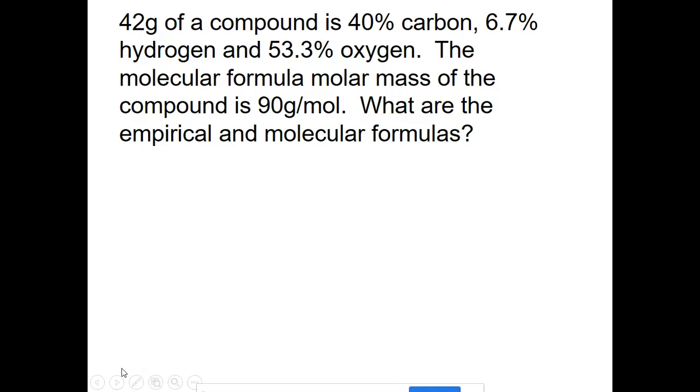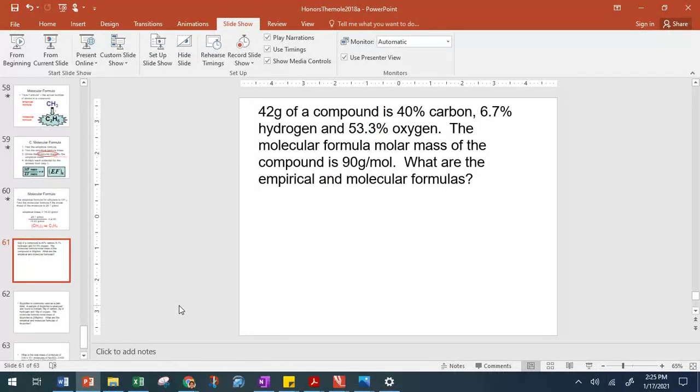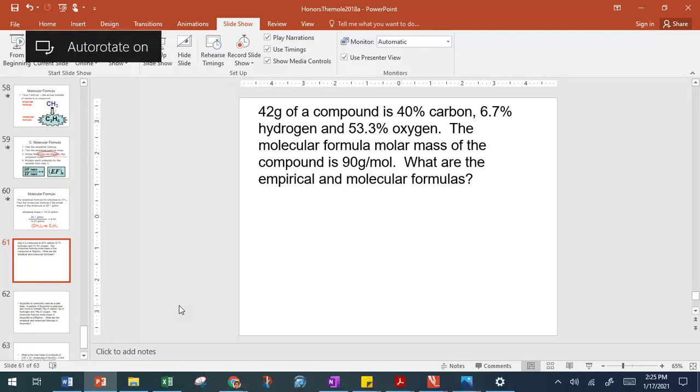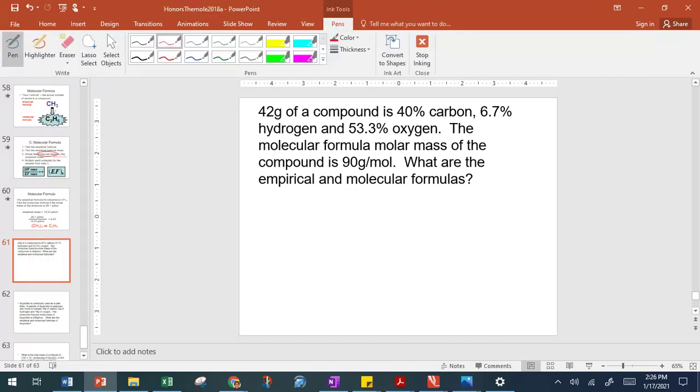Okay, so this is a problem that we didn't do the other day. We're going to go through and figure out the empirical and the molecular formulas. So notice here they give us the grams and they give us the percentages. We don't have to use this 42 grams. This is extra information. We're just going to start with these percentages, assuming that we have a 100-gram sample. Therefore, 40 grams is carbon, 6.7 grams is hydrogen, and 53.3 grams is oxygen.